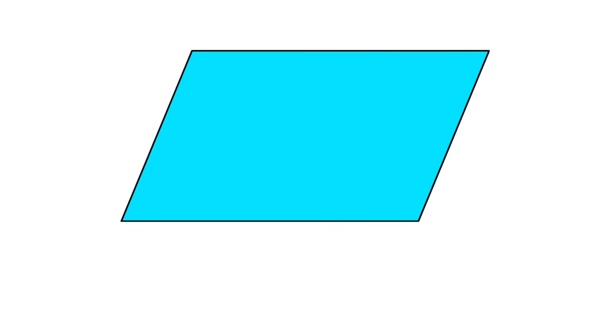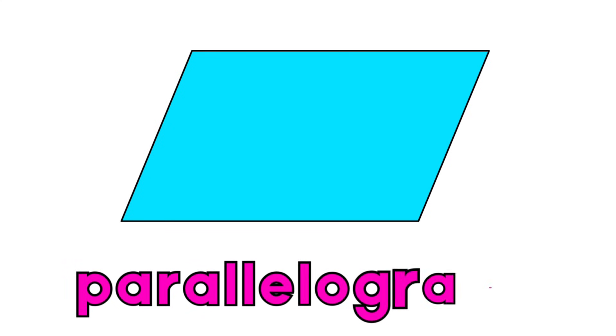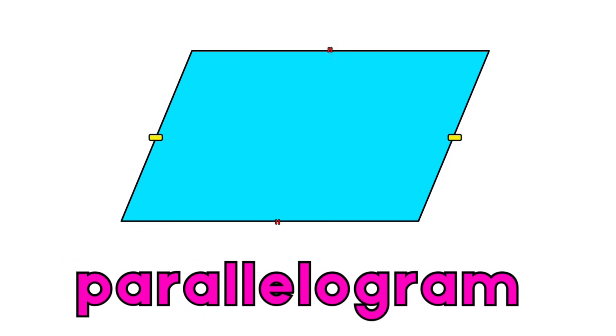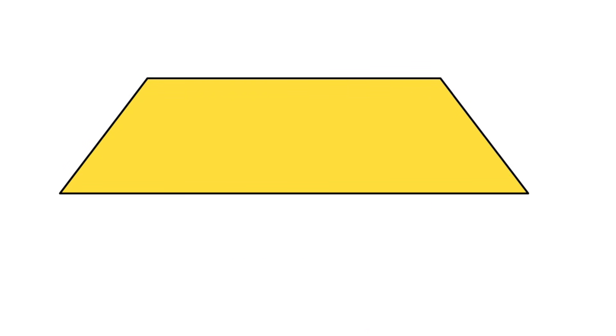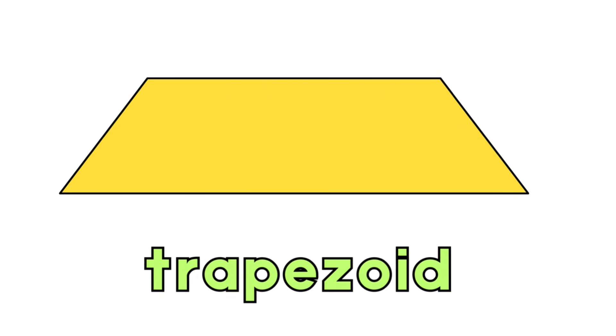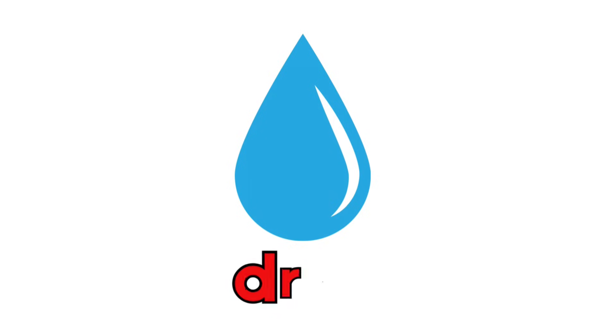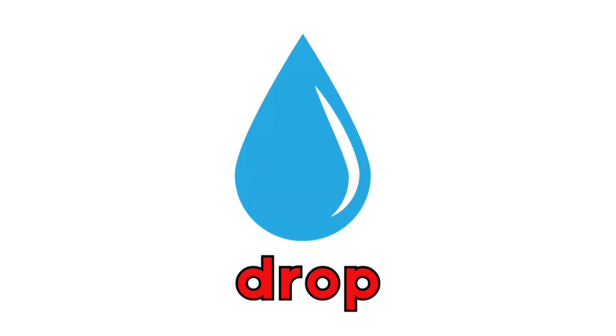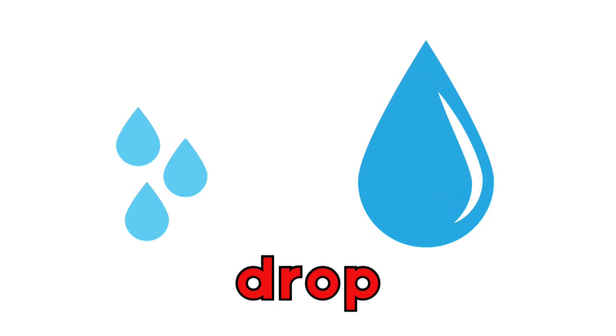What shape is this? Yes, it's a parallelogram. It has two pairs of parallel sides. What shape is this? Correct, it's a trapezoid. It has one pair of parallel sides. What shape is this? Yes, it's a drop shape or teardrop. It looks like a water drop.